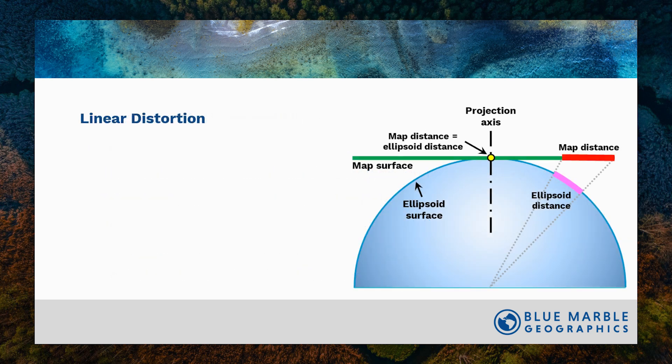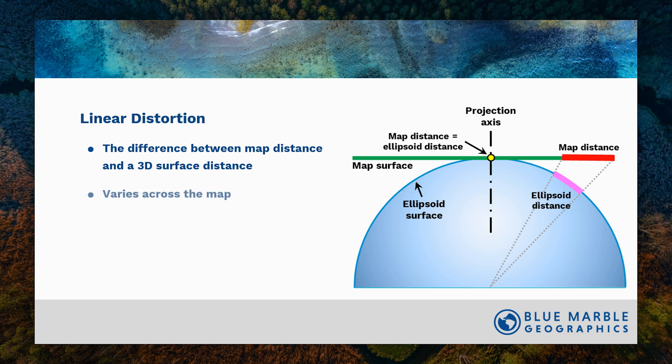So what is linear distortion? It's the difference between the distance on a map and the distance on a 3D surface. In the example here, we've got the ellipsoid surface, but we may want to use the topographic surface instead. Distortion varies across the map, and it increases as the map surface departs from the 3D surface.